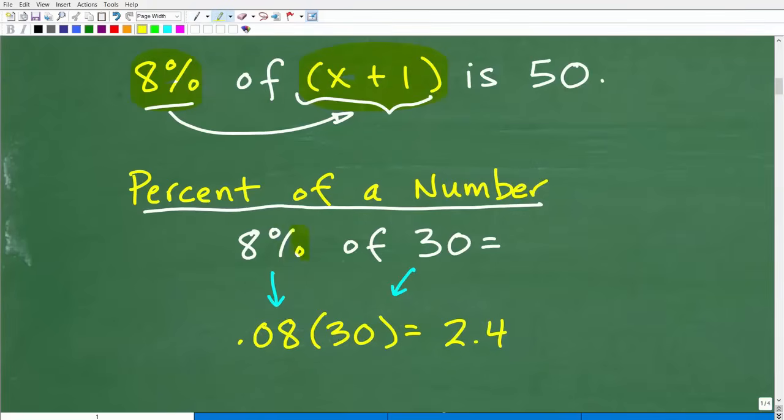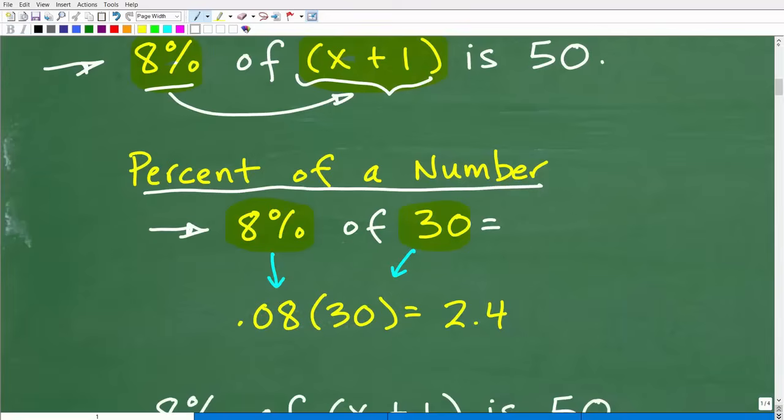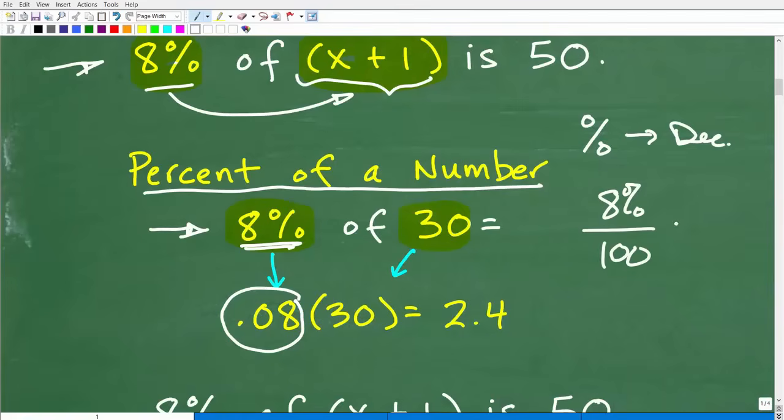So let's just make sure we understand how to find a percent of a number in general. So let's take a look at a problem like this, 8% of 30. So if you can't do this problem, you're definitely not going to be able to do this problem. So how do you find a percent of a number? Well, hopefully you know that what we have to do is we need to change our percent into a decimal. So we're going to rewrite 8% as 0.08. So how do you go from a percent to a decimal? That's pretty easy. All we're going to do is take that percent, in this case it's 8%, we could take that and divide by 100 and we get 0.08.